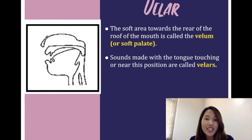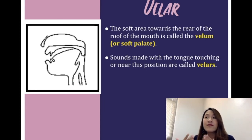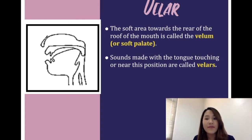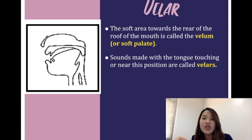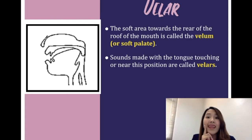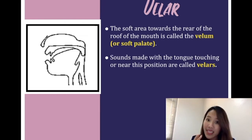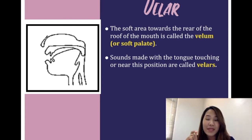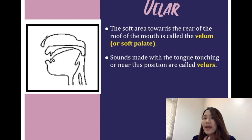The next place of articulation is velar. The velar is the soft area behind the alveolar ridge — that area is also called the velum or soft palate. We can make velar sounds by using our tongue to touch or come near that position. For example, sounds made from this area include the /g/ sound as in 'girl.'